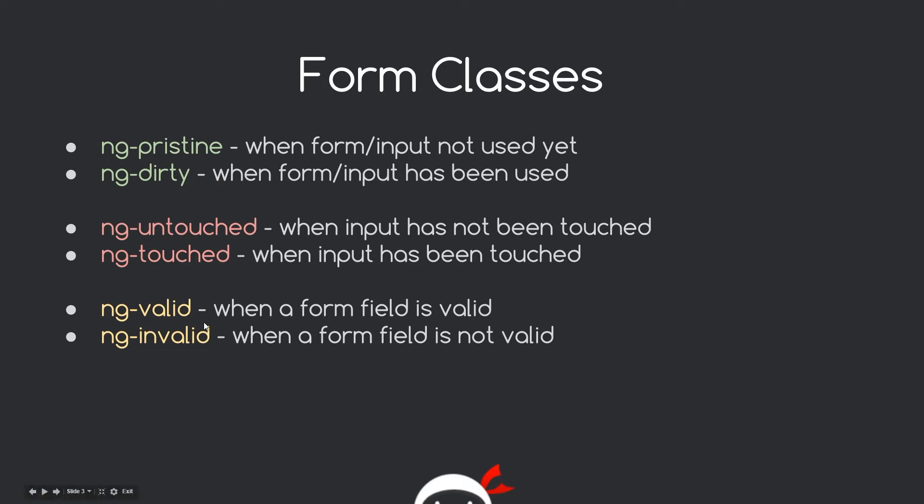The final pair is ng-valid and ng-invalid. These are applied to both the form element and individual input fields. When an input field is valid — for example when we type in a correct email address — Angular removes the ng-invalid class and gives it ng-valid. And if all fields are valid, it removes ng-invalid from the form element itself and gives the whole form ng-valid.